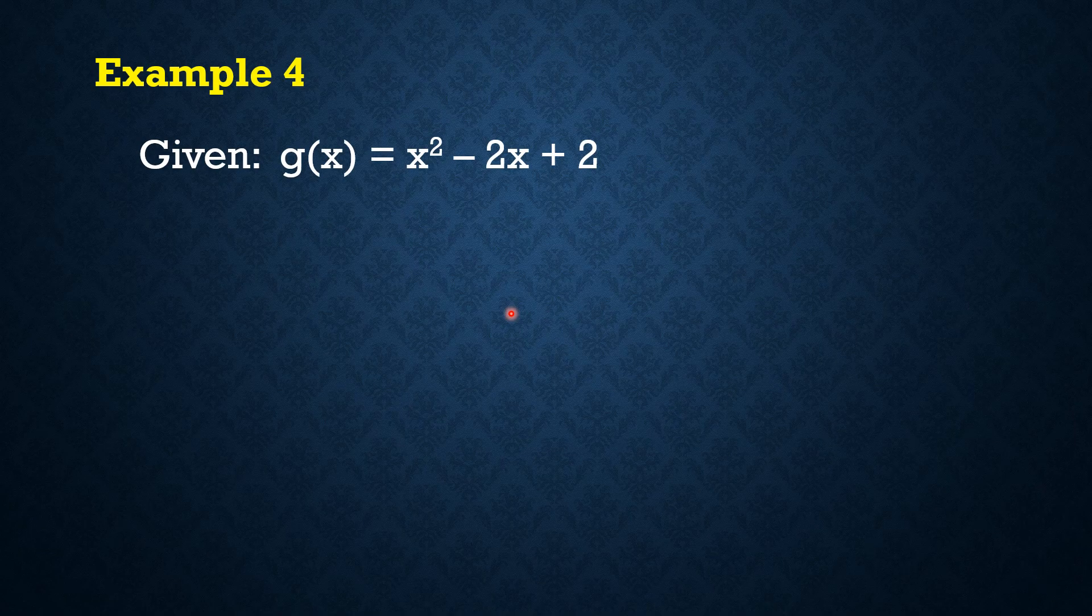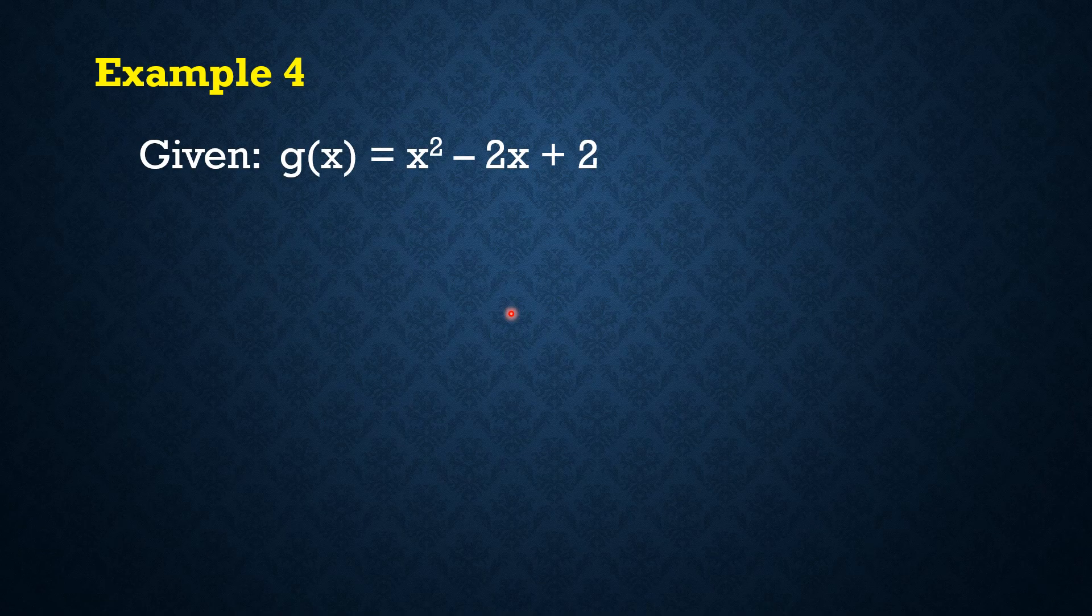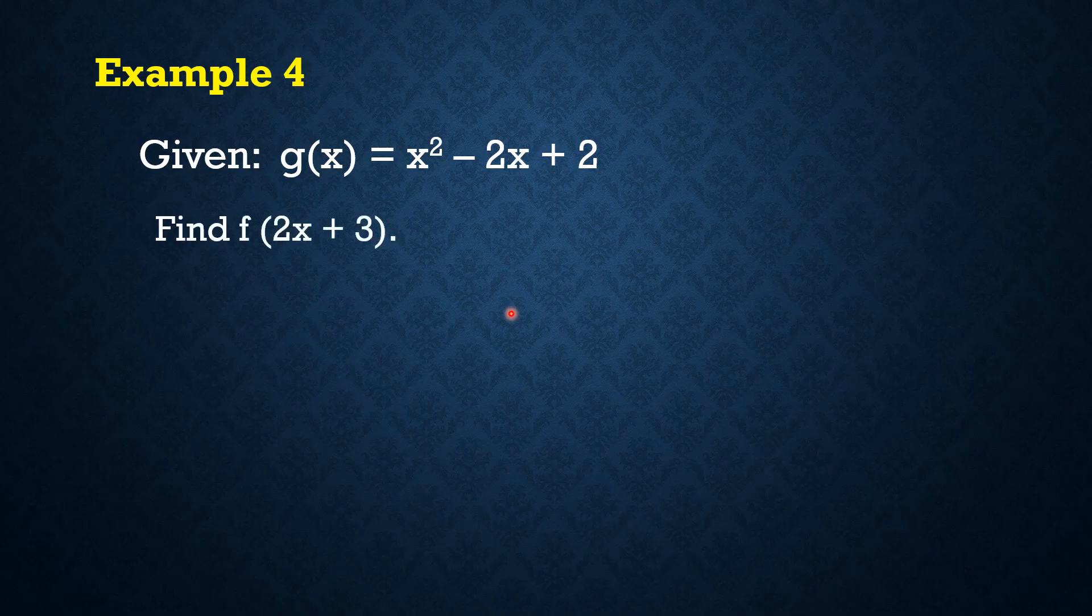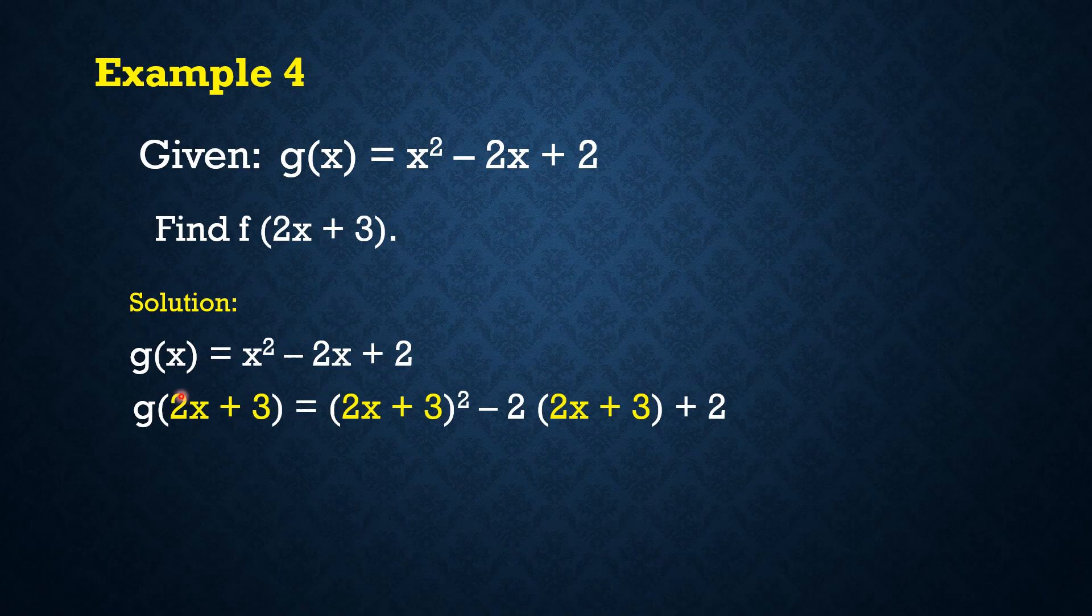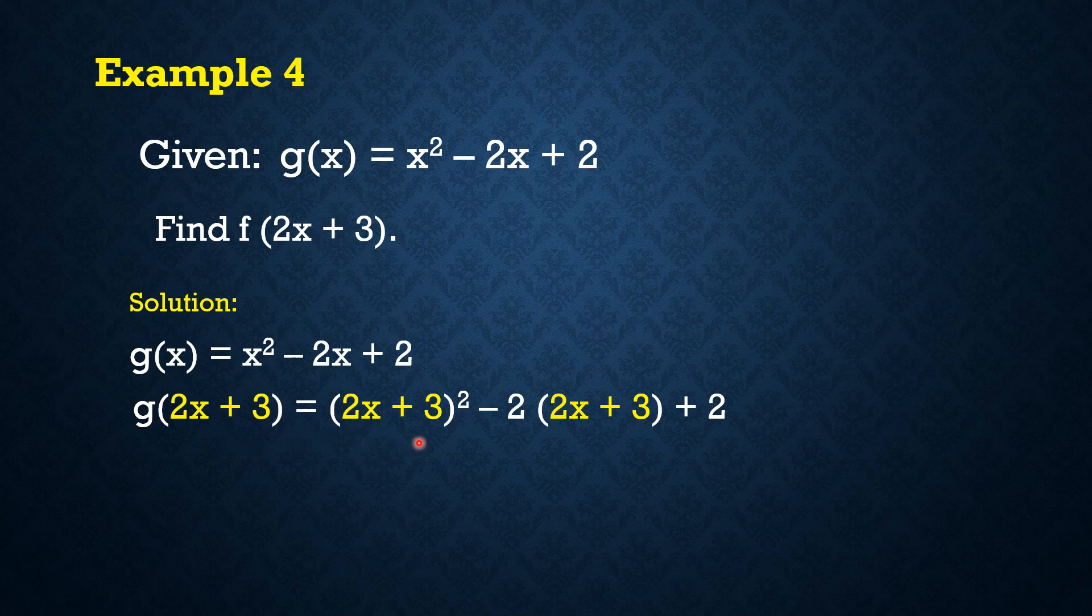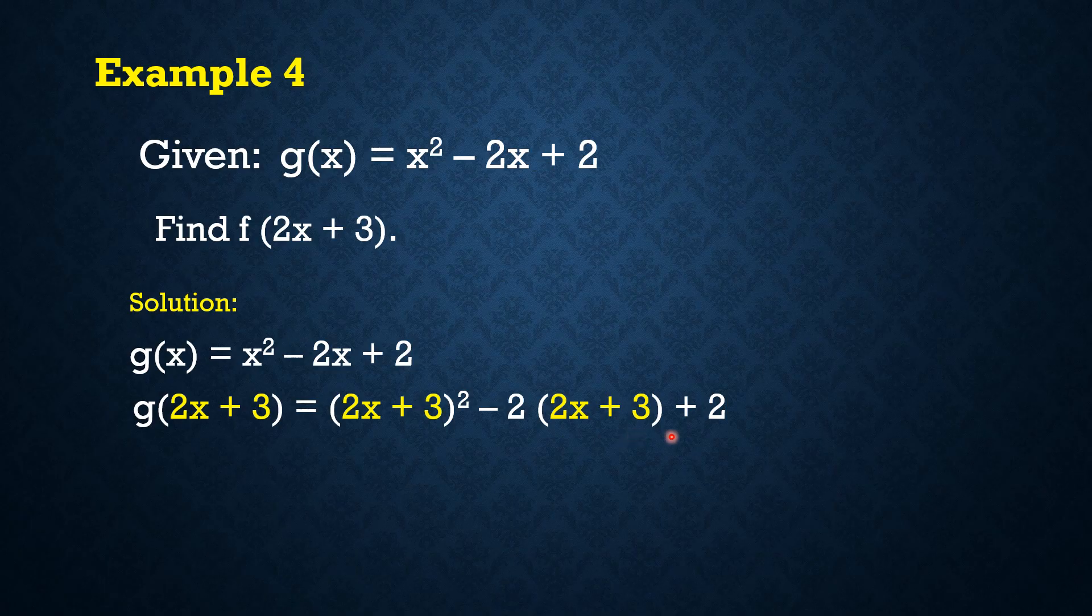And let's say we are given g(x) = x² - 2x + 2, and let's find f of 2x + 3. Same process, let's replace x by 2x + 3. So g(x) = x² - 2x + 2 becomes g(2x + 3) = (2x + 3)² - 2(2x + 3) + 2. By simplifying this, in this case, we expand natin si 2x + 3 because, as you can see, this is a square of binomial.